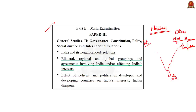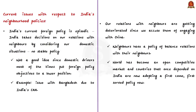What do experts say about India's current problems with neighbors? Firstly, they state that India's current foreign policy is episodic — like an episode of a serial, it changes from one episode to the next. We take decisions with respect to our neighbors by taking into consideration only our domestic situations. This means we do not have a stable policy, and according to the authors, this is not a good idea because domestic drivers change frequently.